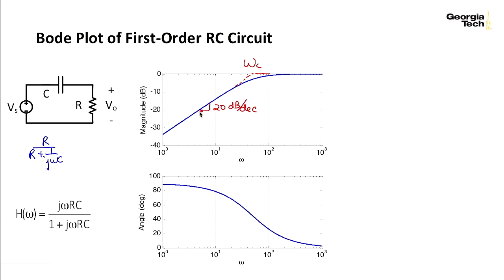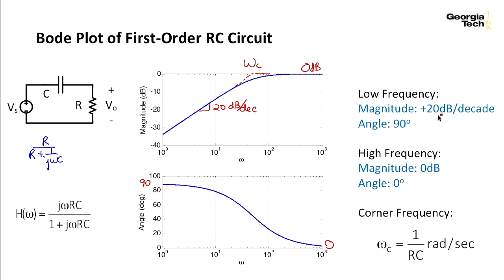Now this is a slope upwards, so it's plus 20 dB per decade. And I go from 90 to 0 degrees as I go from low to low frequency to high frequency. And at high frequency in terms of the magnitude, I go to 0 dB. So to summarize, low frequency magnitude has this slope, angle of 90.